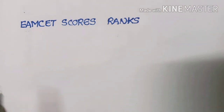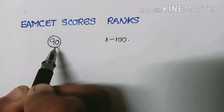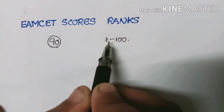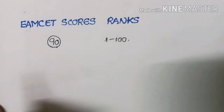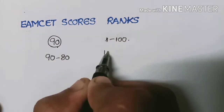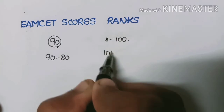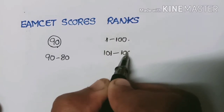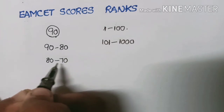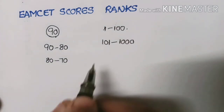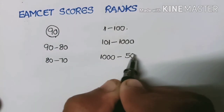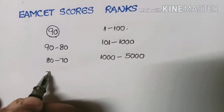Now the expected rank analysis with MSET scores: if the student secured above 90% MSET score, the expected rank is 1 to 100. If the student secured 80 to 90 MSET score, the expected rank is 101 to 1000. If the student secured 70 to 80 MSET score, the expected rank is 1000 to 5000.